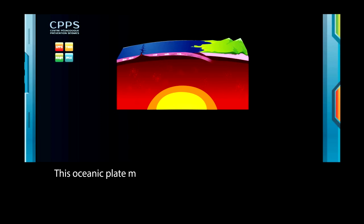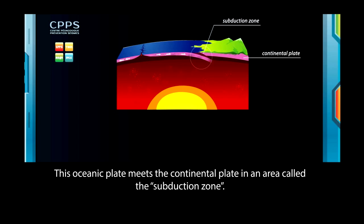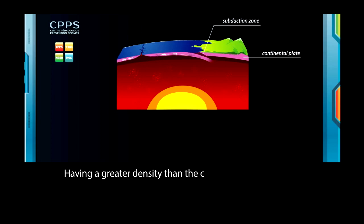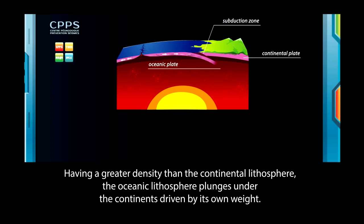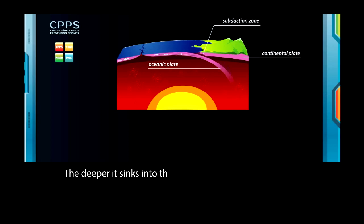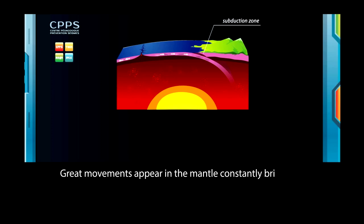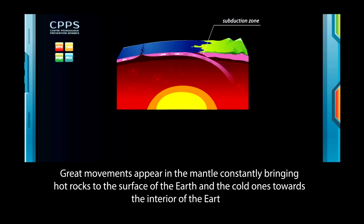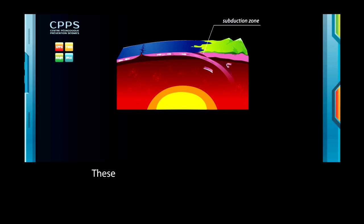This oceanic plate meets the continental plate in an area called the subduction zone. Having a greater density than the continental lithosphere, the oceanic lithosphere plunges under the continents, driven by its own weight. The deeper it sinks into the mantle, the more it warms up. Great movements appear in the mantle, constantly bringing hot rocks to the surface of the Earth, and the cold ones towards the interior of the Earth. These are the motor convection movements of the tectonic plates.